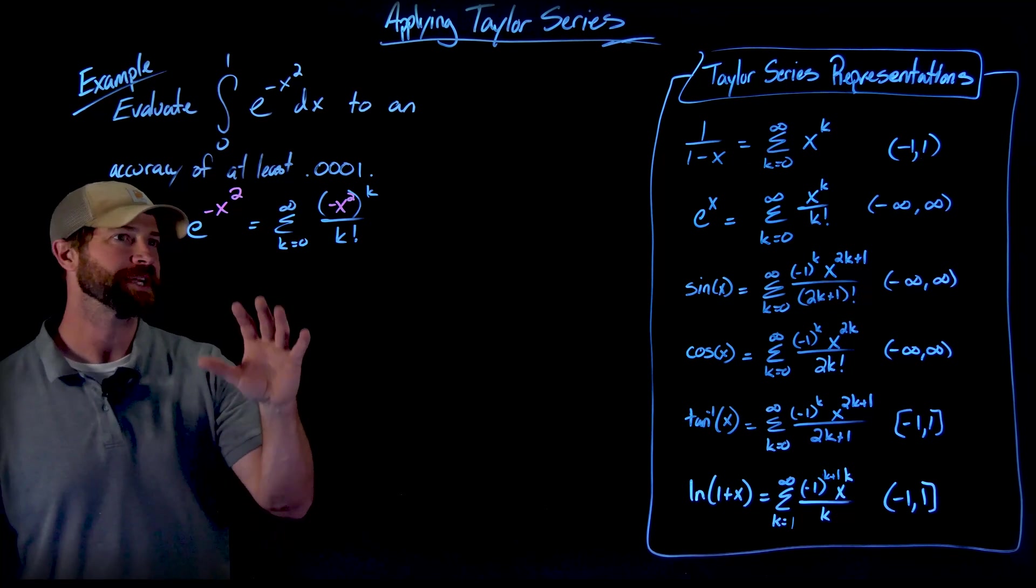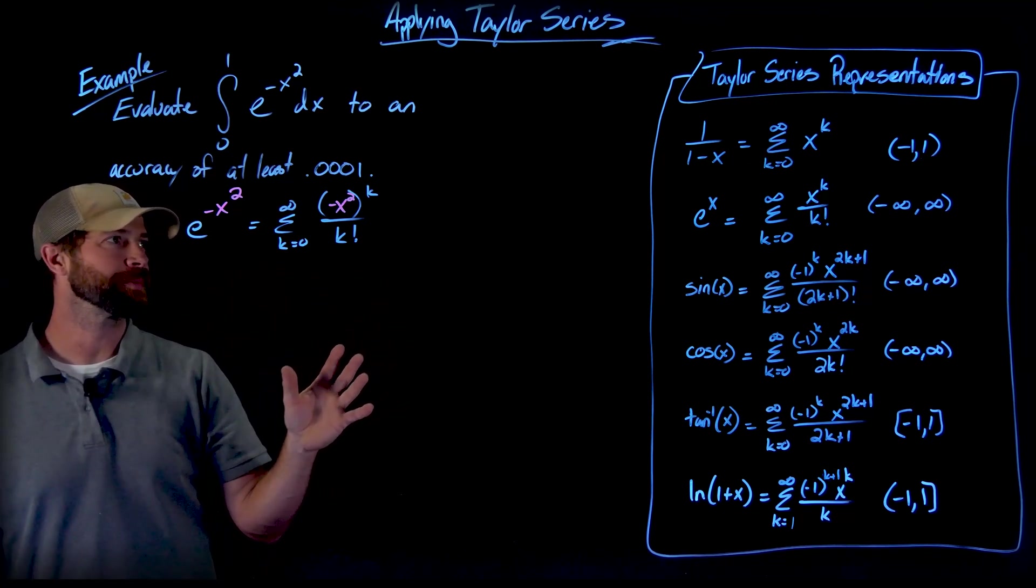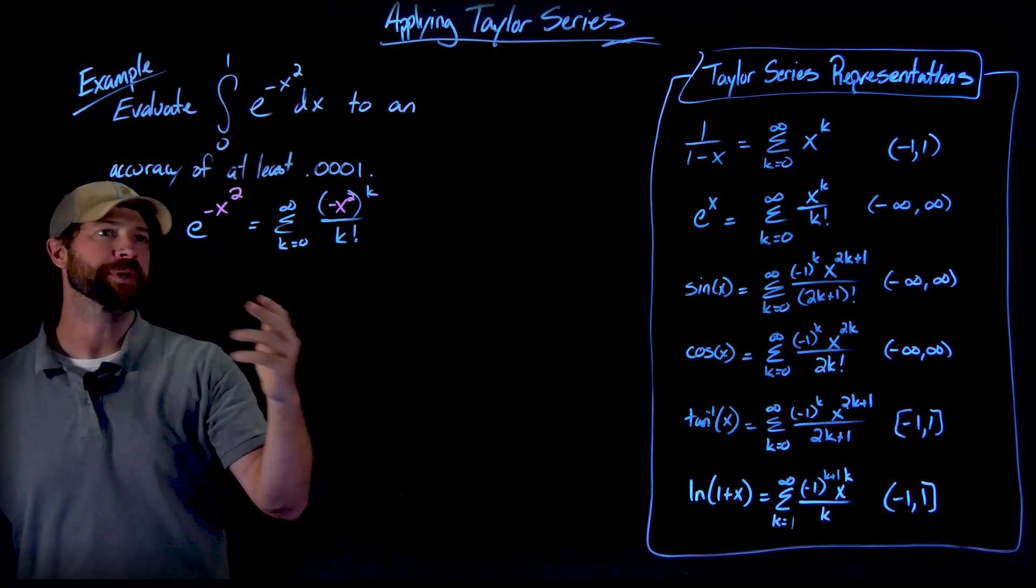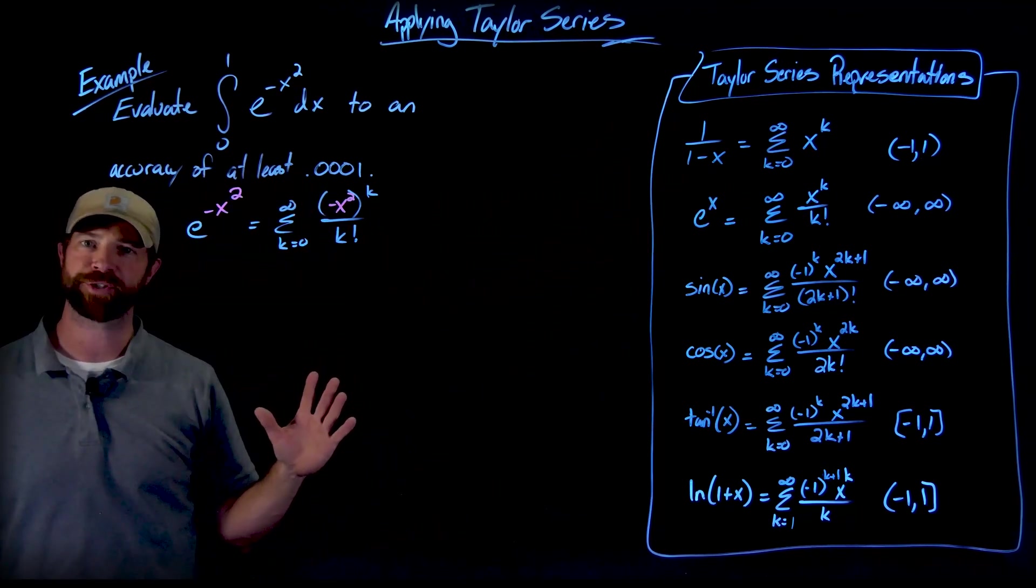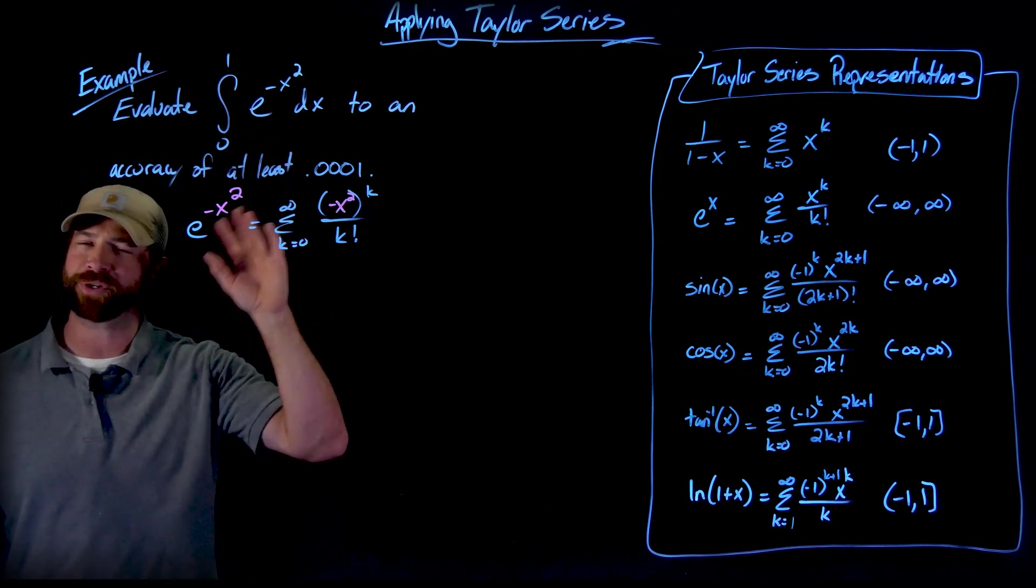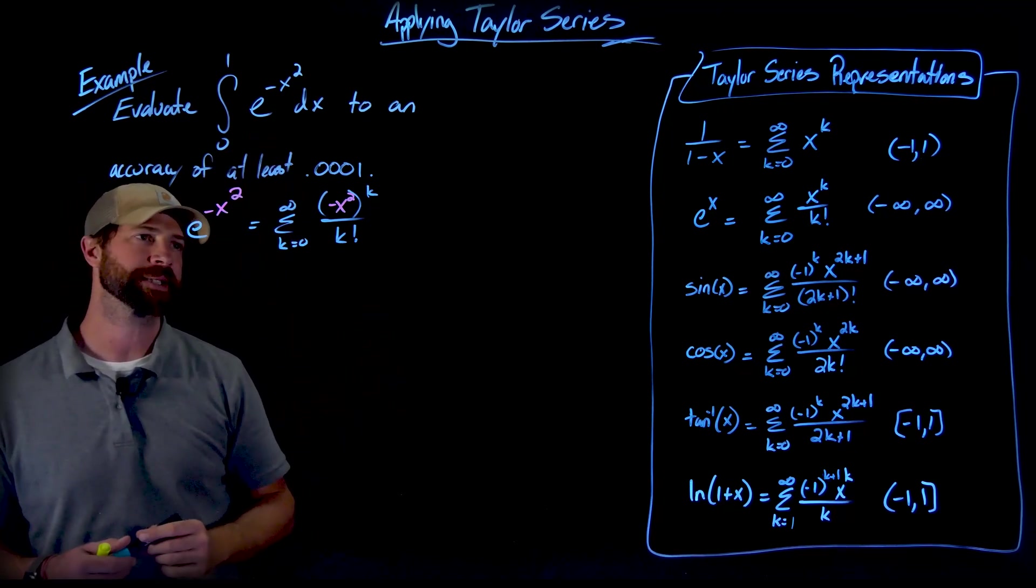My next work is just to make sure that I don't have any issue with my interval of convergence at all. But all x values that I could plug in here would land on the original interval of convergence. So we're just fine. Specifically from 0 to 1 is all I really care about in this case.